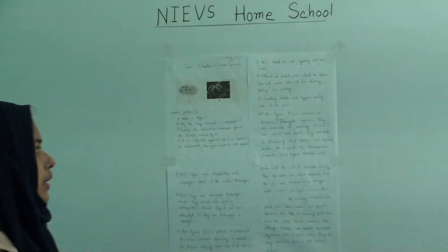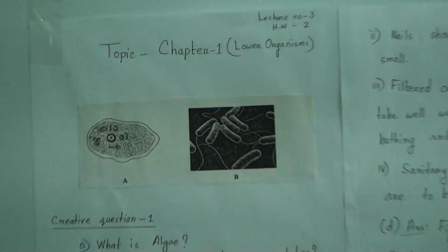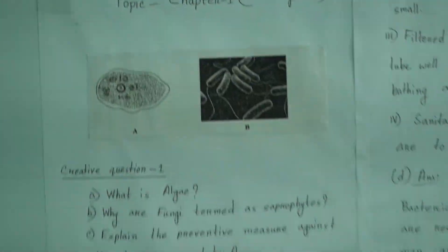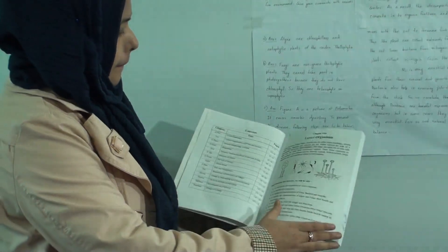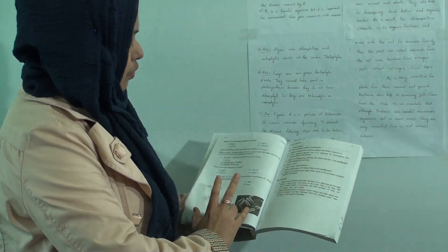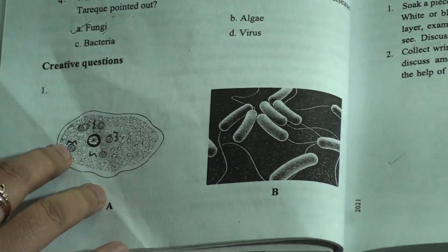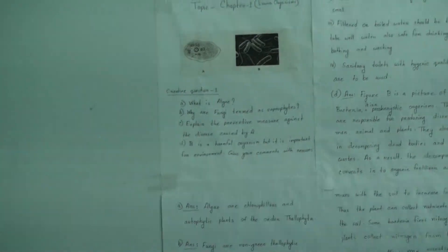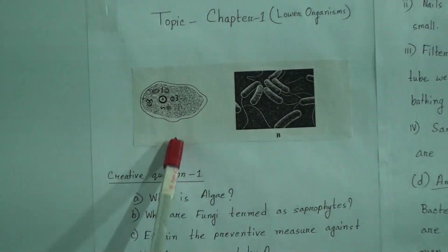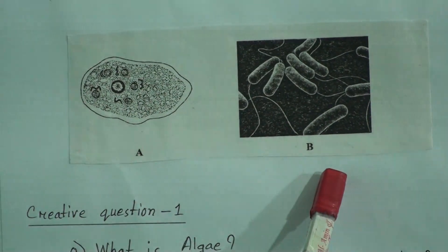So dear students, let's start the class. You can see I have written here Creative Question number 1, Questions and Answers. And this is your science book. From Chapter 1, page number 10, here is the stem. Today we will do this Creative Question and Answers. You can see here is the stem. This is the picture — this is figure A and this one is figure B.